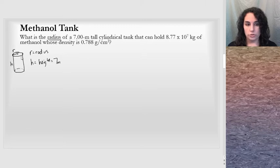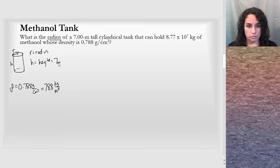So they filled this with methanol. They tell us that the density of methanol, rho, is 0.788 grams per centimeter cubed. I'm going to use the times 10 to the third factor and convert this to 788 kilograms per meter cubed. This will match with the meters that we're using for height and with the kilograms that was given to us for mass.